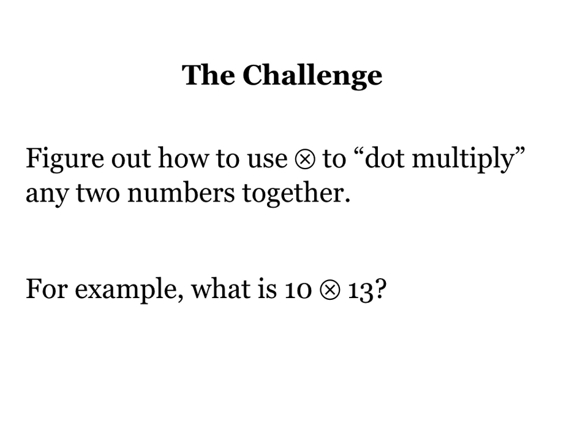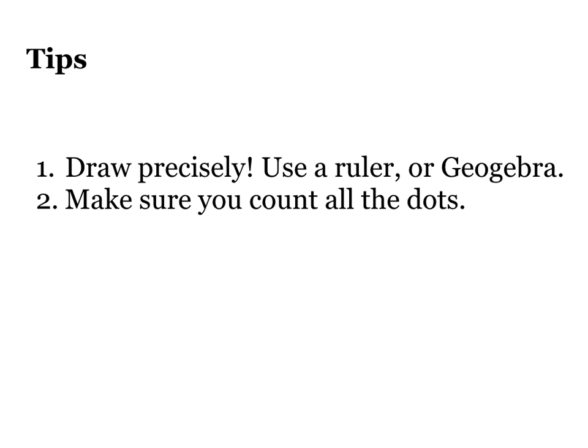So, some tips. Start small and work your way up. See if you can find patterns. Some other tips as you're trying to really figure out how this works. Draw precisely. Use a ruler or a computer program like GeoGebra. And secondly, make sure you count all the dots you get. It's very easy to accidentally miss them. It should be, if you have a bunch of lines all crossing in the same place, you want to avoid that. You want to have each dot just come from one pair of crossing lines instead of a whole bunch.